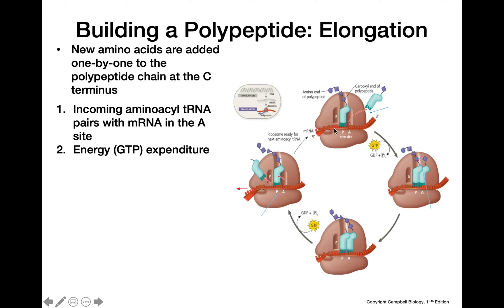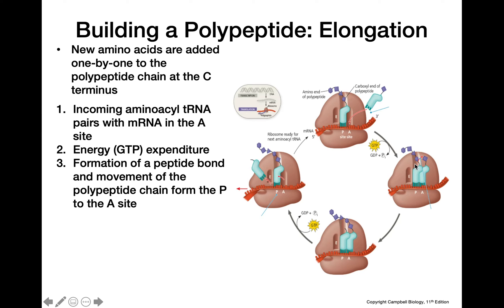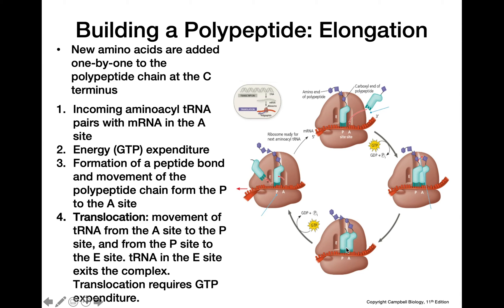Once that happens, we need to hydrolyze a molecule of GTP. Then we're going to form a peptide bond between the amino acid on the tRNA in the A site and the amino acid on the tRNA in the P site. Now the polypeptide chain has been moved from the tRNA in the P site to the tRNA in the A site, as we can see in this image. Next, we're going to have translocation — the entire ribosome is going to move down the mRNA by one codon, so there's a new codon in the A site and the next tRNA can come in.